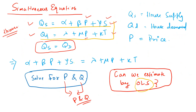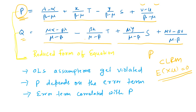Whenever you come across a situation where you have two equations and a couple of variables are common — like P is common here and Q is also common — you will encounter this situation. These two equations are known as simultaneous equations. That means you are trying to find out P and Q simultaneously using two different equations, and in this particular case you will have the problem. The above two equations are known as the reduced form of equations. When you make a transformation in how the equations are represented in econometric models, you arrive at what are known as the reduced form of equations.